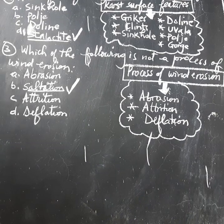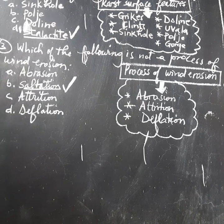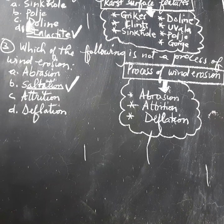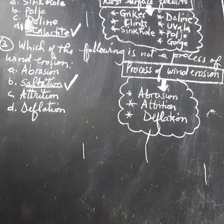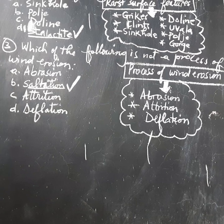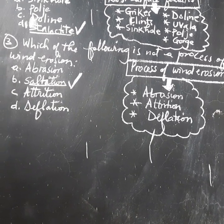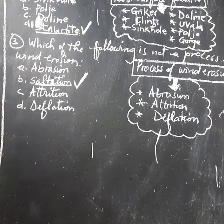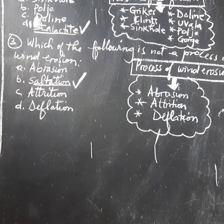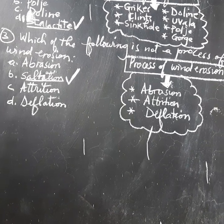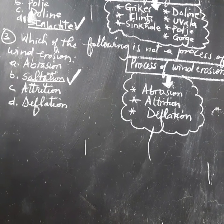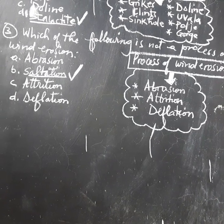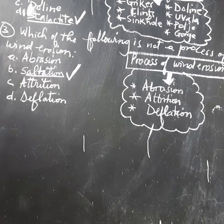Question number three: which of the following is not a process of wind erosion? They give us different processes but want us to choose which one is not a process of wind erosion. A: Abrasion. B: Saltation. C: Attrition. D: Deflation. The correct answer is B, which is saltation. Saltation is not a process of wind erosion, but a process of wind transportation. When you look at the processes shown aside, you may find that saltation is not listed among the processes of wind erosion.